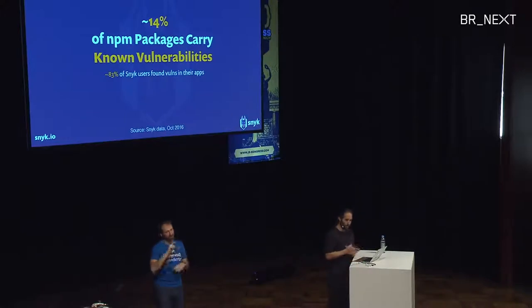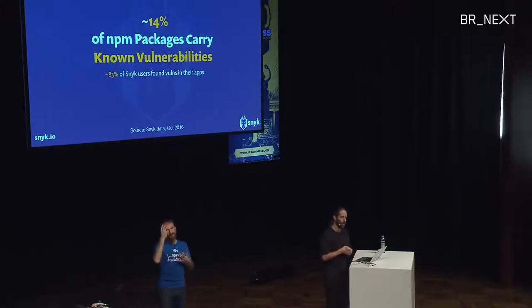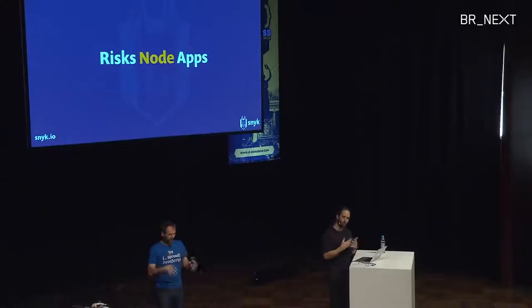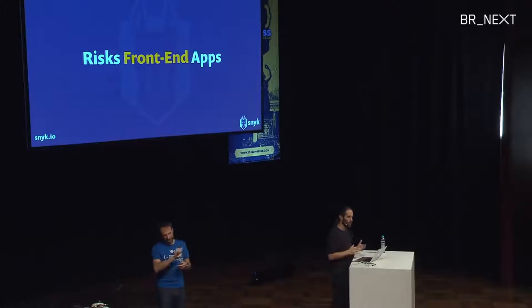This is not a theoretical problem — it's practical. Roughly one in seven or one in eight packages in npm carries a known vulnerability. It doesn't mean 14% of packages are directly vulnerable, but within the ecosystem, roughly 14% would bring in a vulnerability with them. We see that pretty much every node shop has those, and this risks node apps. When you talk about JavaScript, it's not limited to node — it's also true for front-end applications.